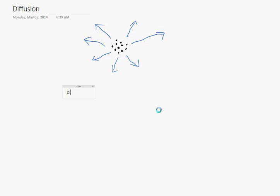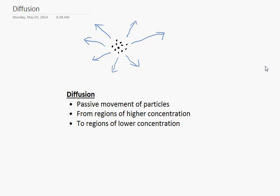A definition of diffusion would be the passive movement of particles from regions of higher concentration to regions of lower concentration. We call it passive. We don't add energy for the particles to spread out. This occurs in all fluids, whether it's a liquid or whether it's in a gas.